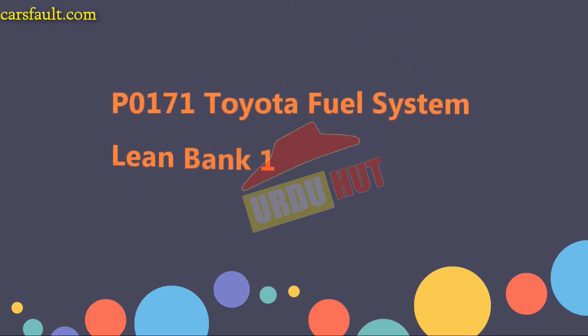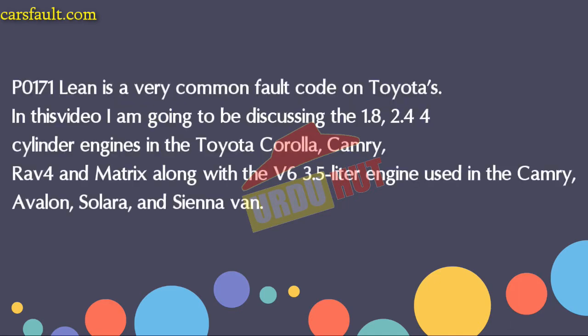Welcome to the Urduhar channel. Today we're talking about the fault OBD code P0171 — fuel system lean, bank one. The P0171 lean code is a very common fault code in Toyota models. In this video I'm going to be discussing the 1.8 and 2.4 four-cylinder engines in the Toyota Corolla, Camry, RAV4, and Matrix, along with the V6 3.5-liter engine used in the Camry, Avalon, Solara, and Sienna van.